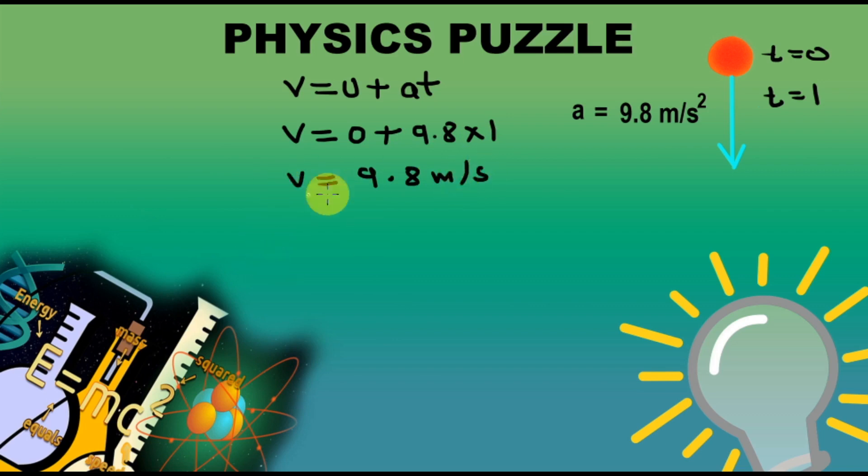As we know, velocity is equal to distance upon time. So, distance is equal to 9.8 meter per second, multiply by 1 second. We get the distance is equal to 9.8 meters. So far, so good. This is not the puzzle.